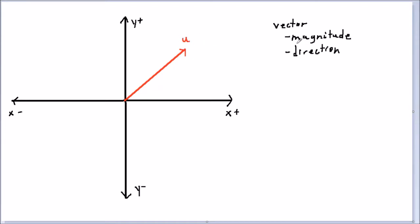Vector u is going to have both a magnitude and a direction. The magnitude is simply the length of the vector, and we represent this as u with absolute value bars around it — read as 'magnitude u.' The direction we can think of as just an angle, because on this coordinate plane a single angle can represent a direction. By convention, we define this angle as starting from the positive x-axis and going counterclockwise, and we call this angle theta.